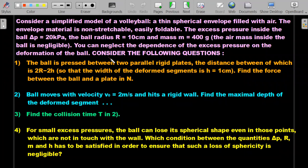Consider the following questions in sequence: (1) The ball is pressed between two parallel rigid plates, the distance between which is 2R - 2h, so that the width of deformed segments on either side is h = 1 cm. Find the force between the ball and the plate in Newtons. (2) Ball moves with velocity v₀ = 2 m/s and hits a rigid wall. Find the maximal depth of the deformed segment.